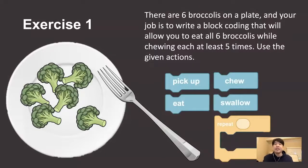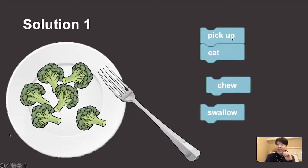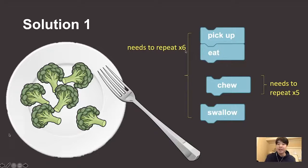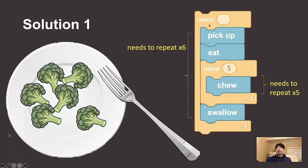Exercise number one. Let's say there are six broccolis on a plate. Your job is to write a block code that will allow you to eat six broccolis while chewing each one at least five times. Here are the given actions: picking up, chewing, eating, swallowing, and there's a repeating function. Pause the video and come back once you're done. Welcome back. You need to pick up the broccoli, and you have to eat it. After you're eating it, you have to chew, then you swallow. The chewing happens multiple times. We want to chew at least five times. Then we need to repeat this whole process six times because there are six broccolis.